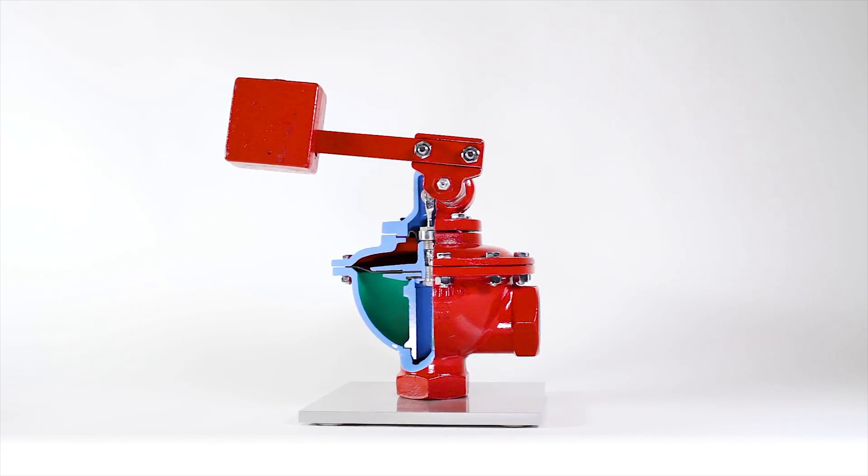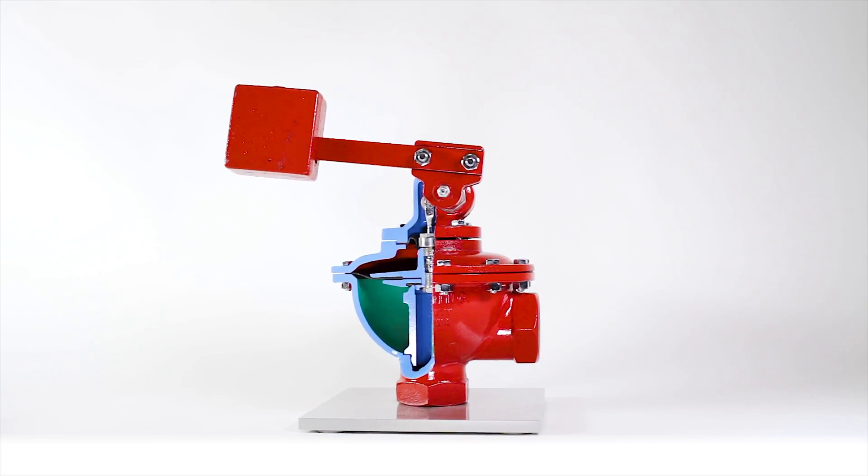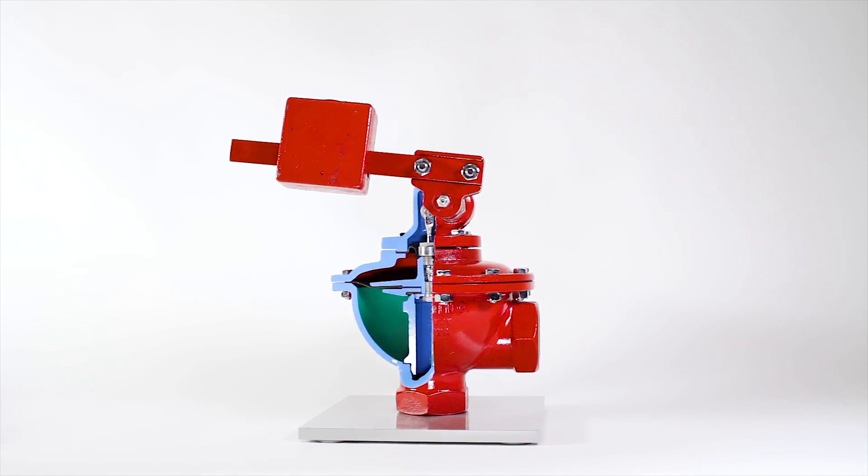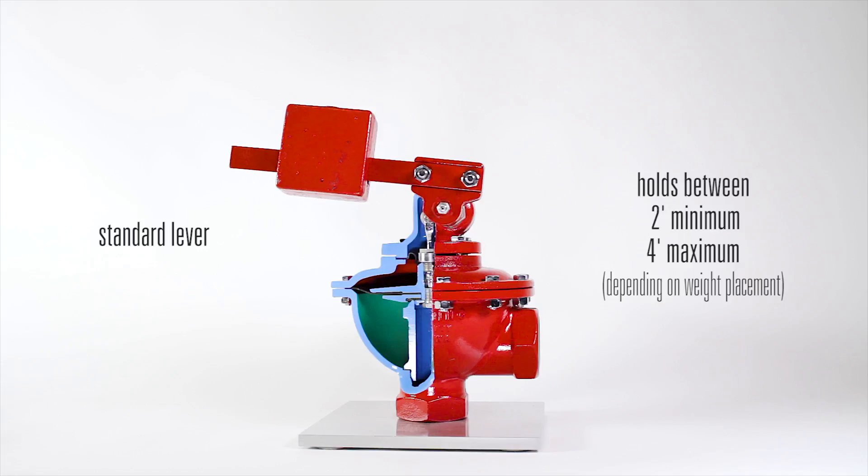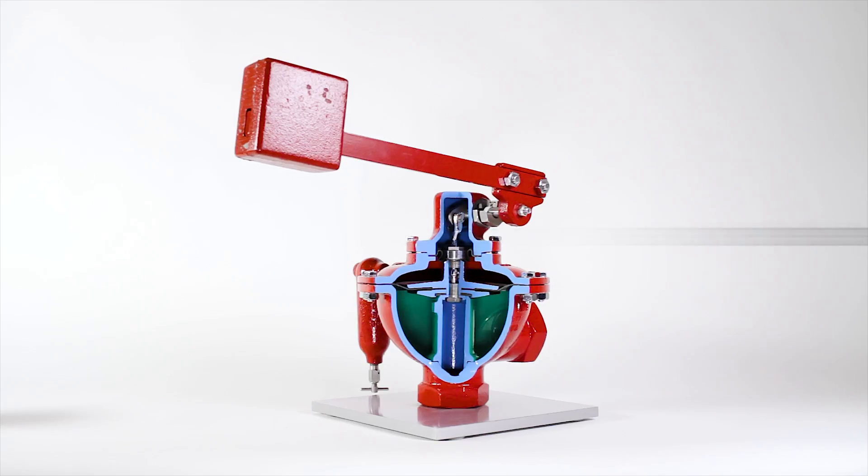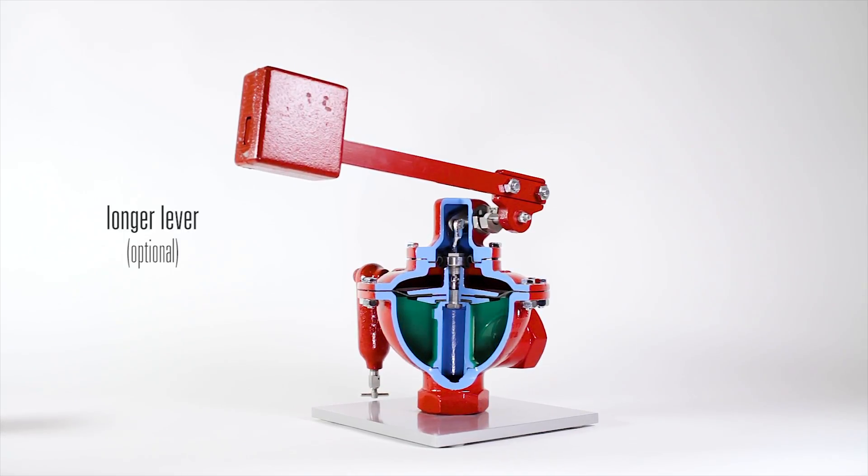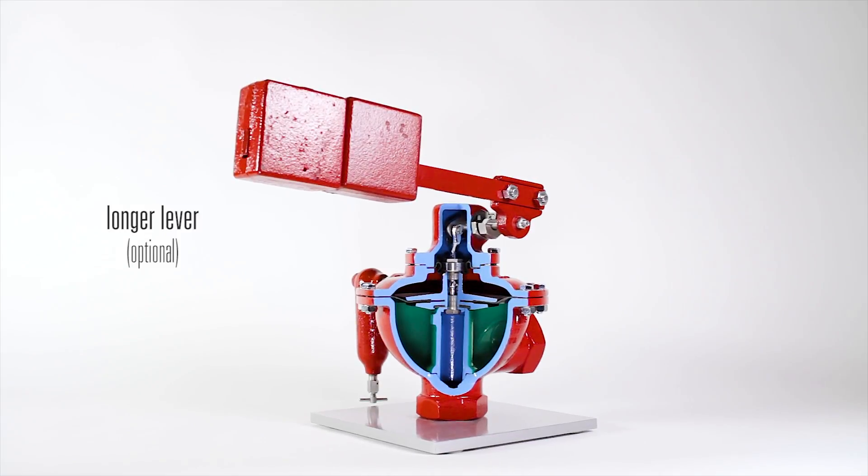The height of the water column can be field adjusted by moving the weight on the attached lever in or out. The standard lever is designed to hold between two and four feet of liquid. Higher liquid levels can be achieved with an optional longer lever and an additional weight.